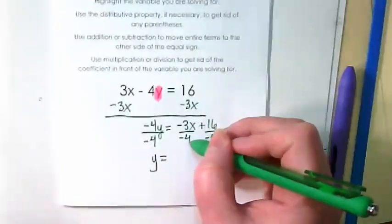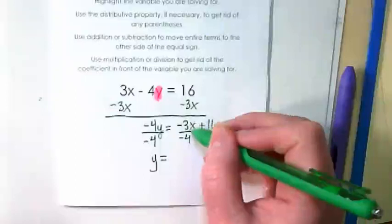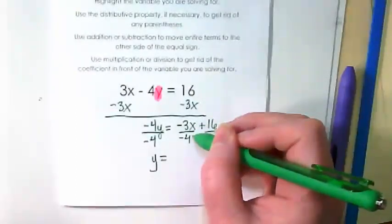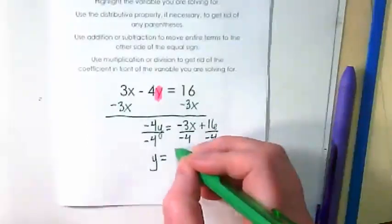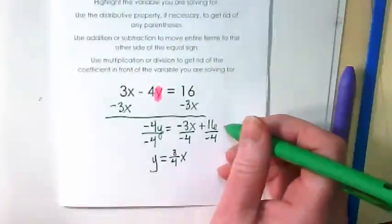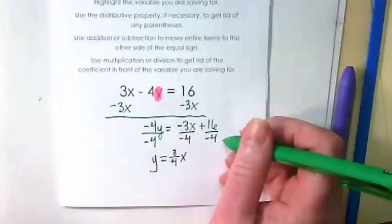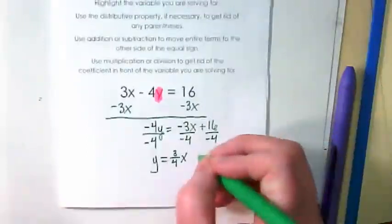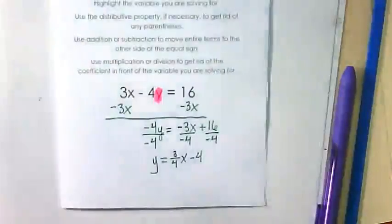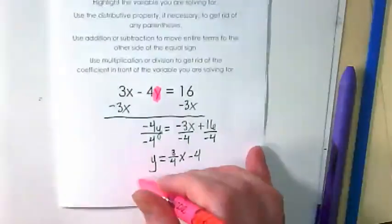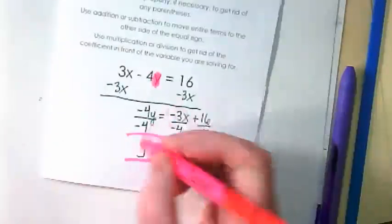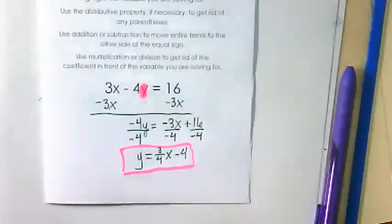Negative 3 divided by negative 4 is going to stay 3 over 4. That's our slope, right? But the negative over negative means it's going to be positive. Positive 16 divided by negative 4 is going to give us a minus 4 or a negative 4. And that is the opposite version of the same equation.